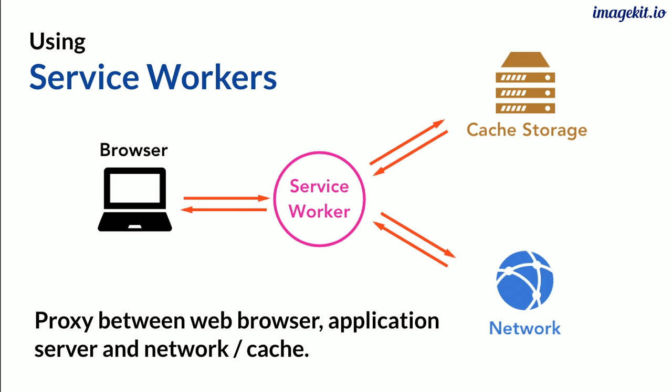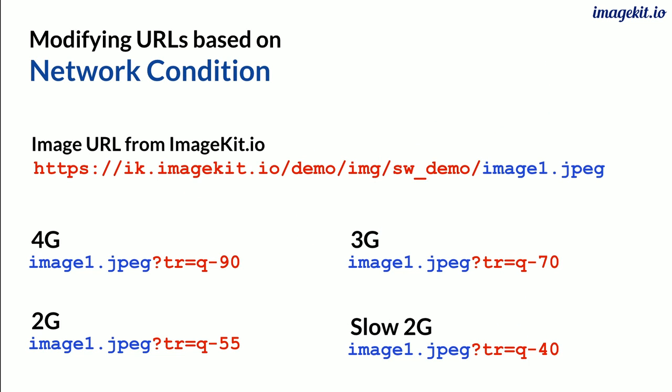The service worker sits as an intermediate proxy between the user's browser, the cache storage, and the network. What the service worker allows us to do is intercept every request and then decide where to get the response from — from storage, from the network, or by modifying the URL. That modify-the-URL part is what we are looking at. If we detect 4G, we change the URL to use quality 90; 3G gives quality 70; 2G gives 55; slow 2G gives 40. This is what we'll use the service worker for.